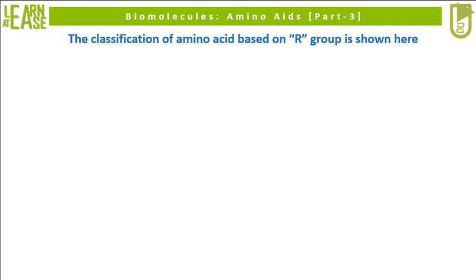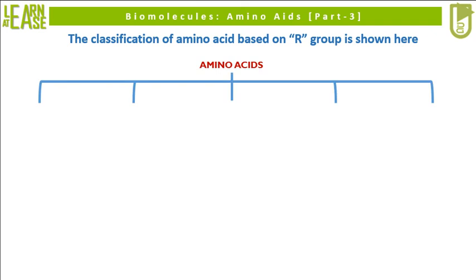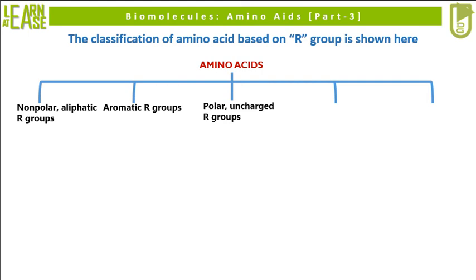The classification of amino acids based on R group is shown here. The 5 groups are: amino acids with nonpolar aliphatic R groups, amino acids with aromatic R groups, amino acids with polar uncharged R groups, amino acids with positively charged R groups, and amino acids with negatively charged R groups.